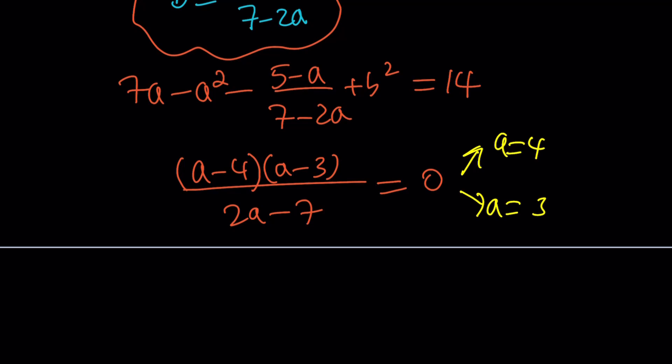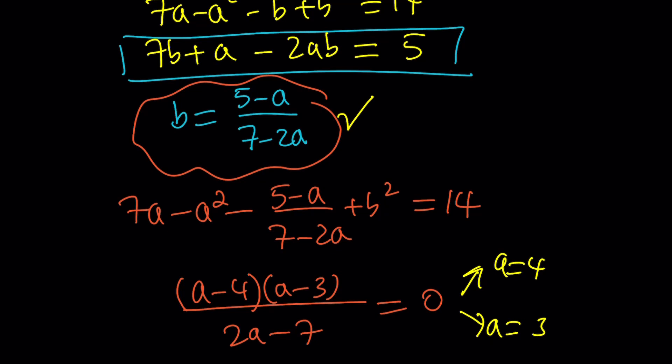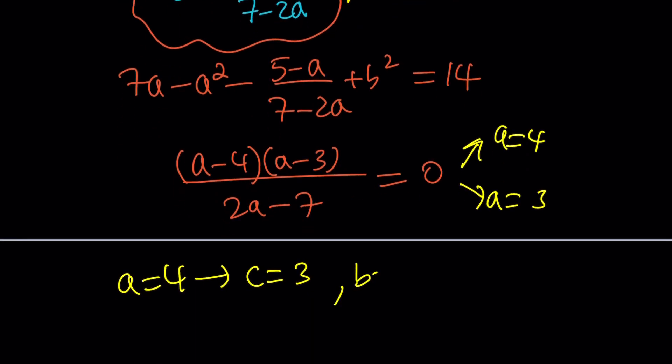Now notice that A plus C is 7. So if A is equal to 4, then C is going to be 3. And then since we have this equation for A equals 4, we're going to get B equals negative 1. And since C is equal to 3, D is going to be 2 from here.